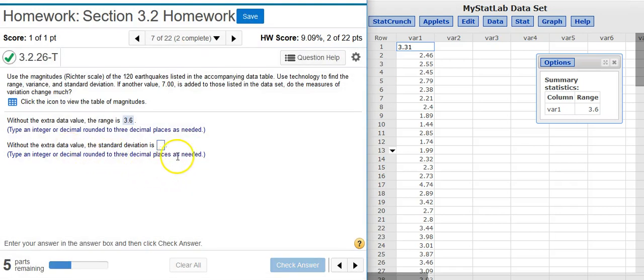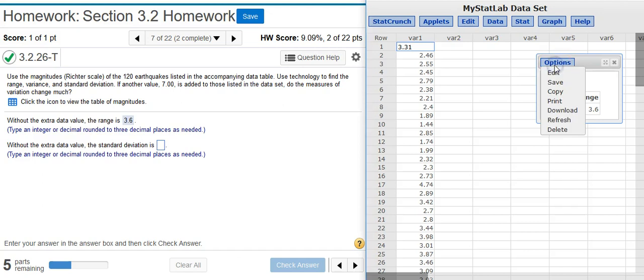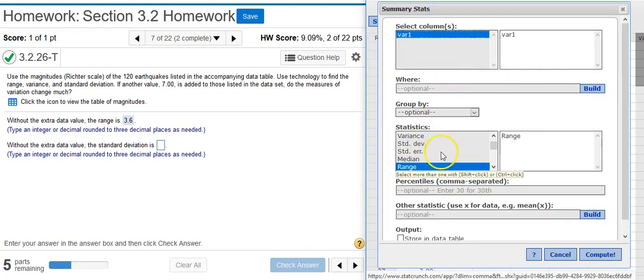Now the next part asks me to find the standard deviation. I could go through these menu options again, or I could just go up here to Options in my Results window. And then in the drop-down menu, click Edit, and it takes me right back to the same options window where I can just select the new standard deviation that I want to calculate.